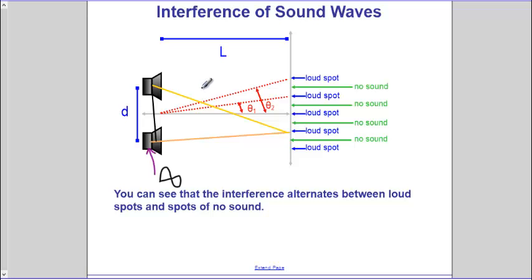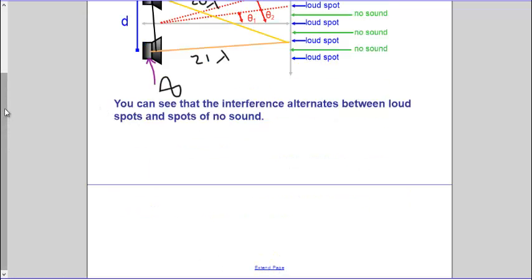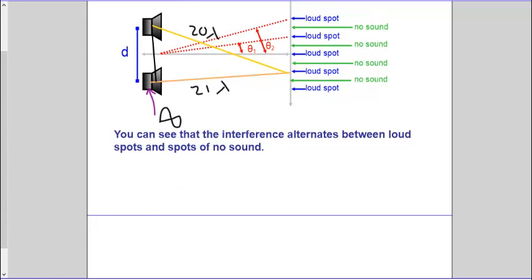Let's say you fit 20 wavelengths of sound waves on that yellow path — that would mean you'd fit 21 wavelengths on the pink path. I'm going to redraw this triangle. So we have that distance D, which is the distance between the speakers. This is complex, so I'm going to take my time explaining it.